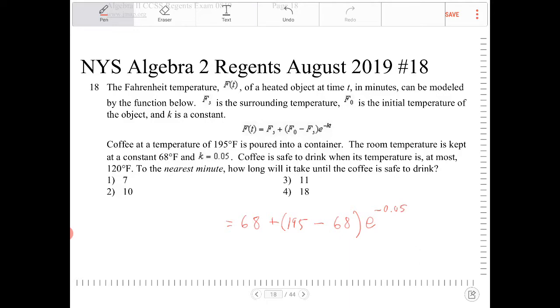Coffee is safe to drink when its temperature is at most 120 degrees Fahrenheit. So that is the temperature after some elapsed time. To the nearest minute, how long will it take until the coffee is safe to drink? So we're looking for the value of t. So I've substituted in all the values that we know that's given to us in the problem.